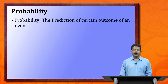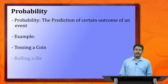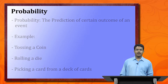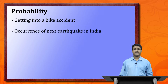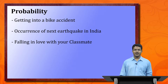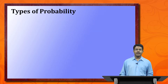Probability basically defines in a very simple way the prediction or measurement of chance of an event. For example: tossing a coin, rolling a die, picking a card from a deck of cards, getting into a bike accident, occurrence of the next earthquake in India, or even falling in love with your classmates — all of these can be calculated using probability.